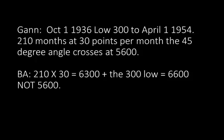Gann, October 1, 1936, low 300 to April 1, 1954 — 210 months at 30 points per month. The 45-degree angle crosses at 5,600. BA: 210 times 30 equals 6,300 plus the 300 low equals 6,600, not 5,600. Now, I know what you're thinking — like I did when I first read this — that's got to be a typo, right? He just displaced the number five or six. No, it's done purposely. Gann would think, would make typos. But as we'll see, this actually starts to form something very important. So we have to check each one of these for the math to make sure it's right, and when it's wrong, we want to take a look at why.